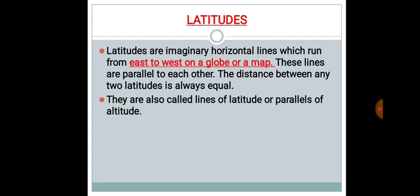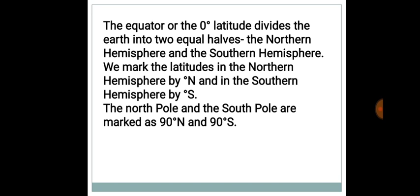These are also called lines of latitudes or parallels of latitudes. The equator, or the zero degree latitude, divides the earth into two equal halves - the Northern Hemisphere and the Southern Hemisphere.